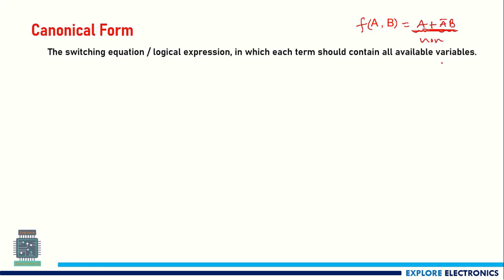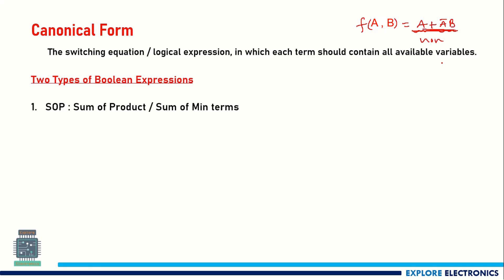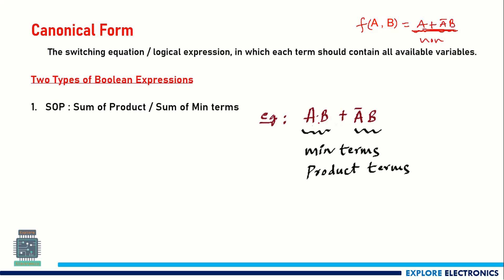Before going to that conversion, we need to understand there are two types of Boolean expressions. One is SOP — Sum of Products, also called sum of minterms. For example, ab + āb is a sum of products because 'ab' and 'āb' are two product terms and we are taking the sum of those two. These products are called minterms or product terms.